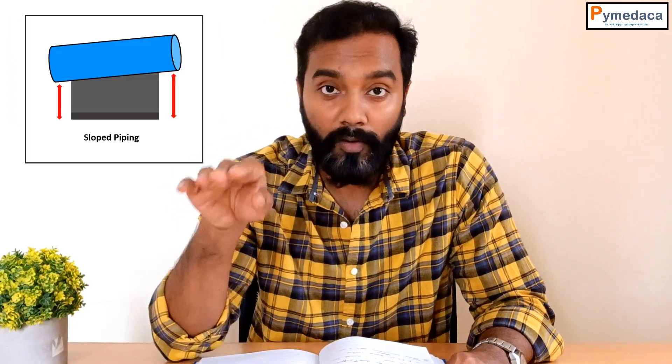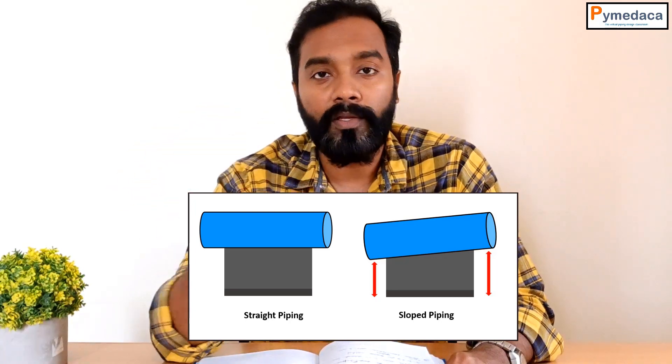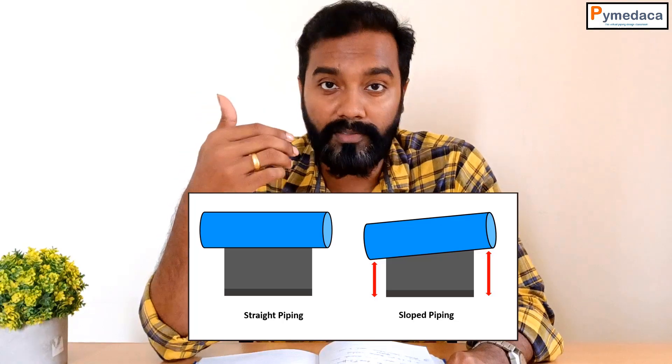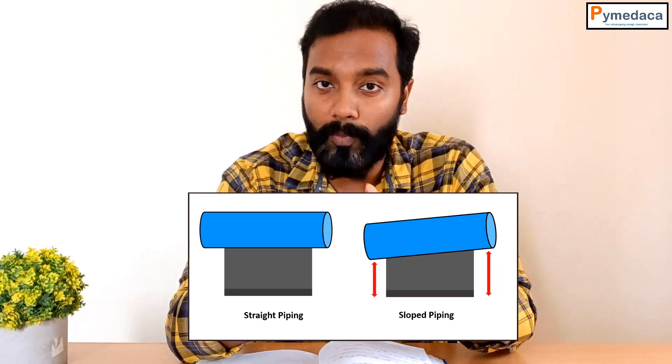For example, if you take a pipe shoe: in a straight line, the top and bottom profile of the shoe support will be horizontally straight, but in slope lines the top profile of the shoe support will be sloped to match the slope line. This type of support is typical for all slope lines, and it is not more complicated than providing supports for straight lines.